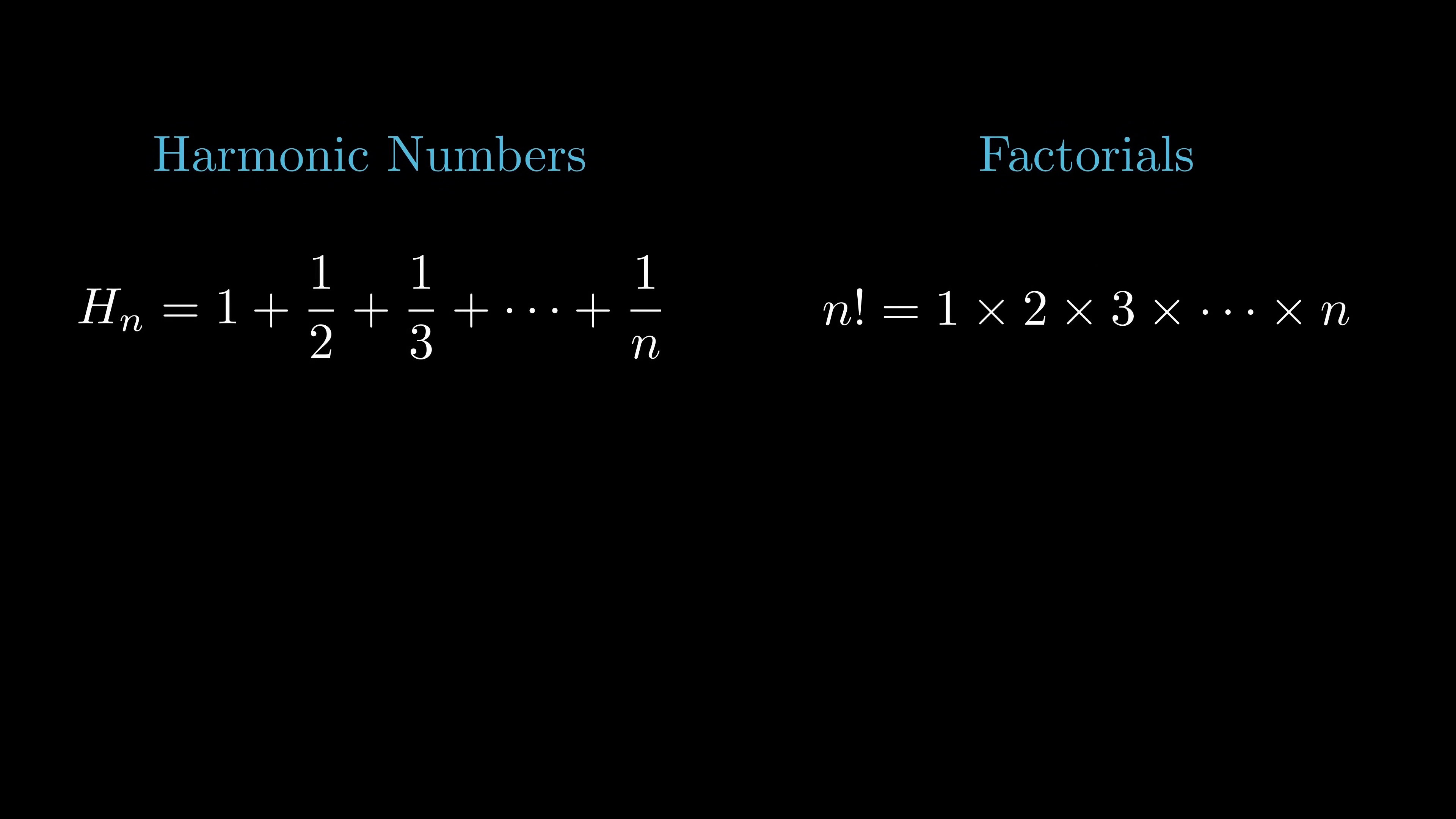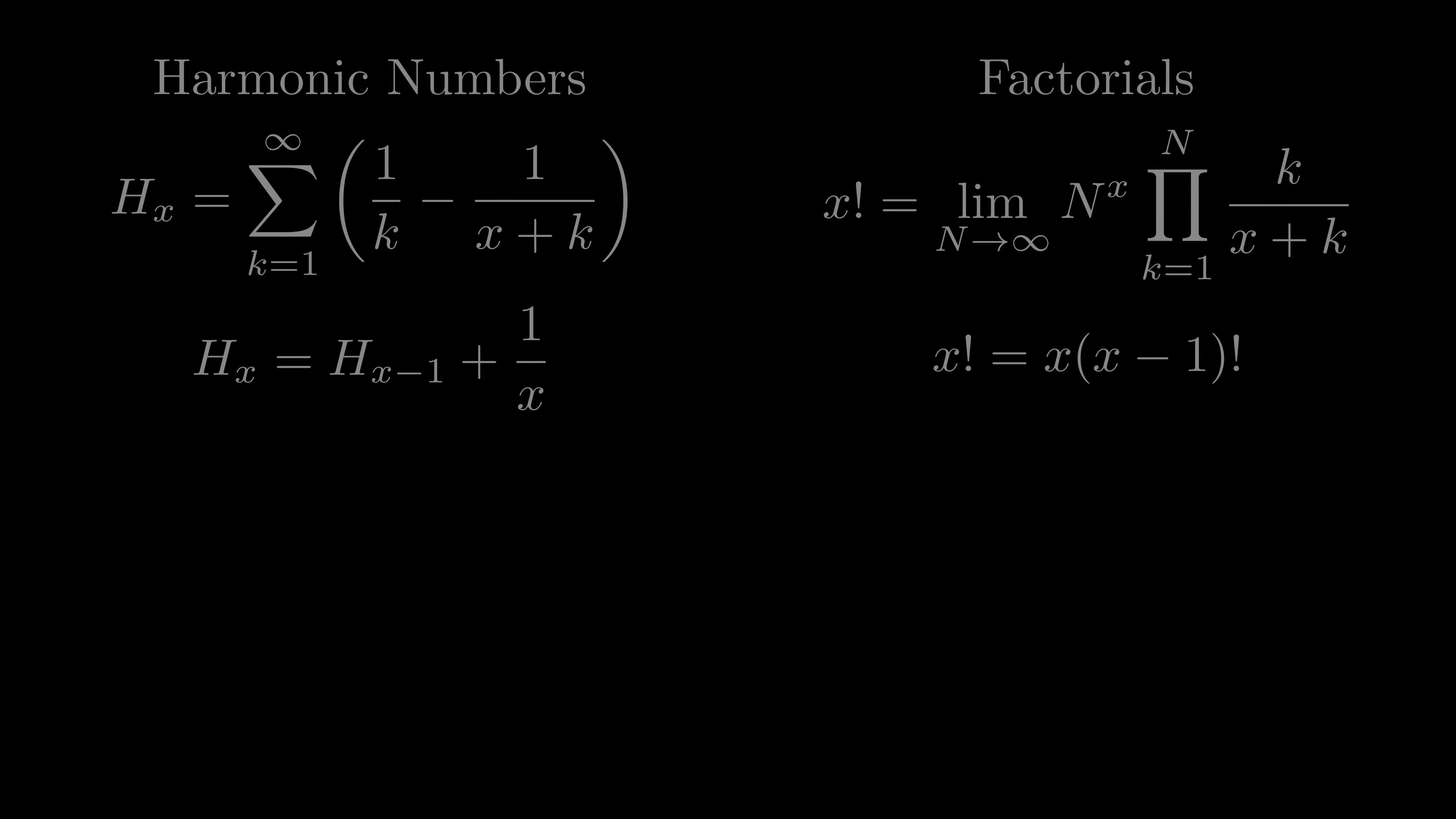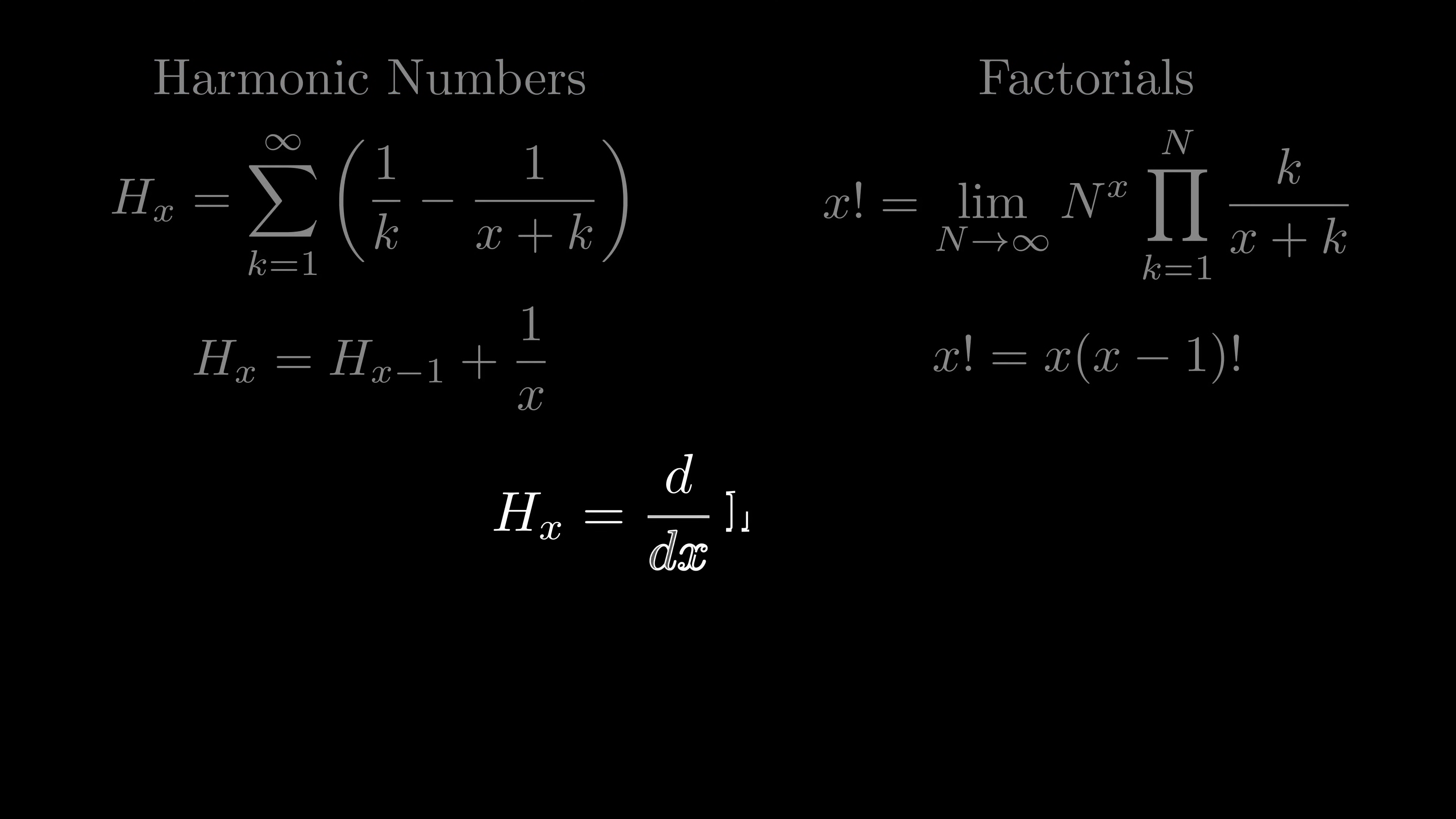We extended the domain of the harmonic numbers with this infinite sum, and we extended the domain of the factorials with this limit. Each of these functions satisfies a corresponding recursive formula, which was actually one of the key defining properties that guided our solutions. And finally, the surprising connection that I mentioned is that the extension of the harmonic numbers is the derivative of the logarithm of the factorial function, plus a constant called gamma, which is equal to this limit.